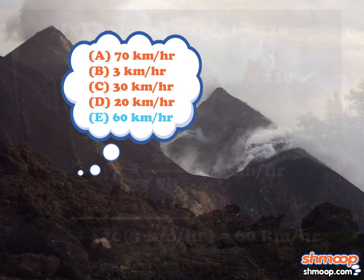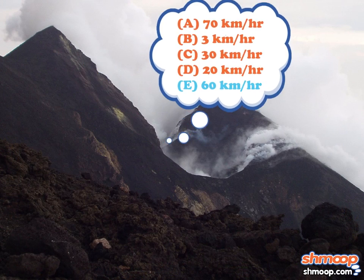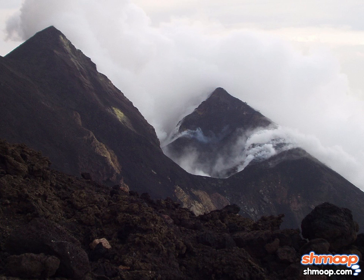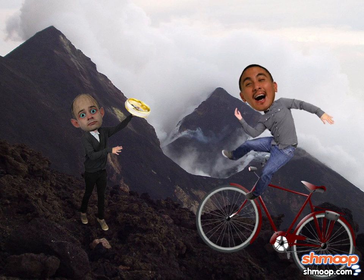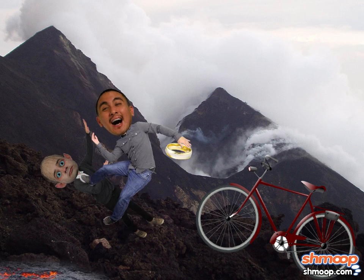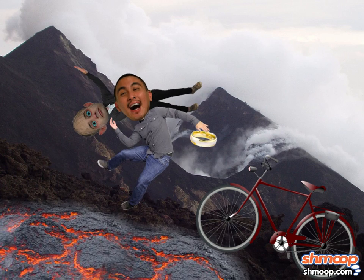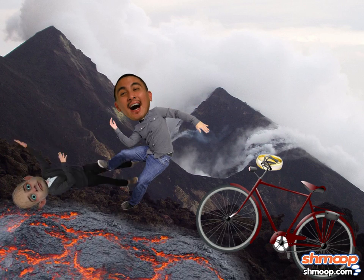As it turns out, Kavi arrives at the same answer we did, just as he catches up with Gollum and wrestles the ring from the creature's grasp. When he's done, Kavi throws him into the molten lava for good measure.